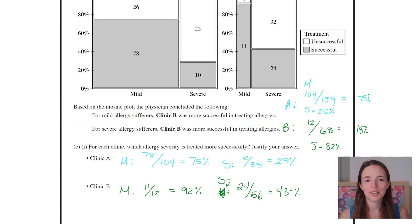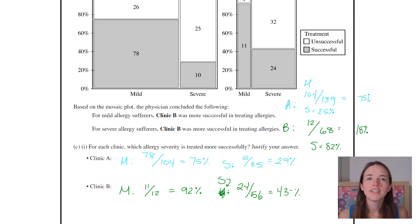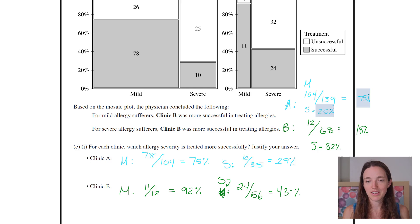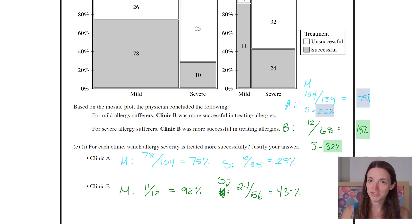I know this is messy, I'm sorry. I literally almost stopped recording because I'm so annoyed at how messy it looks, but I'm going to keep going. So for clinic A, 75% of them are mild cases and 25% are severe. Clinic B, the reverse is happening — only 18% are mild, 82% are severe.